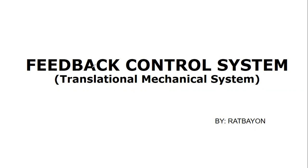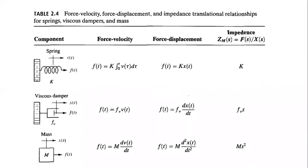In this video we'll be discussing the transfer function of translational mechanical systems. Just like with the electrical system, we have three passive elements for the translational mechanical system. When we say translational, we refer to a mechanical system whose output displacements are linear.